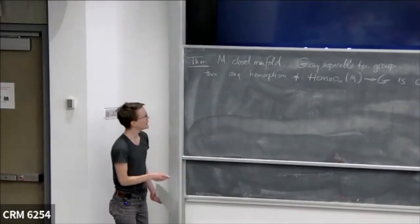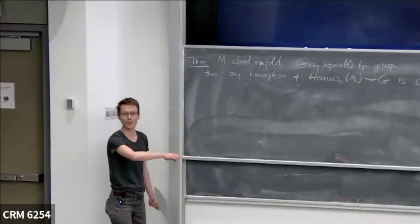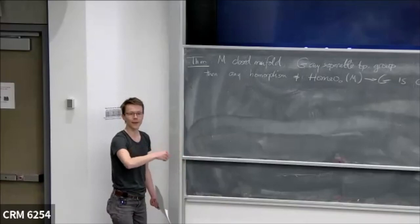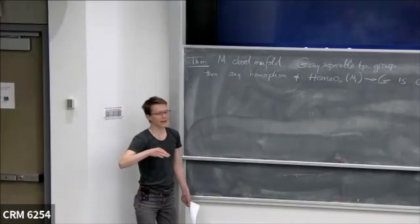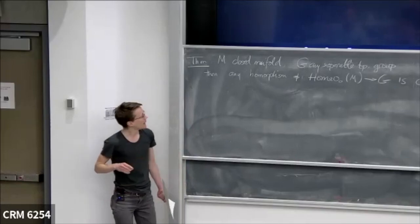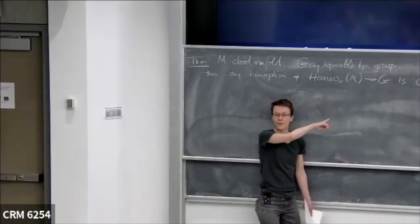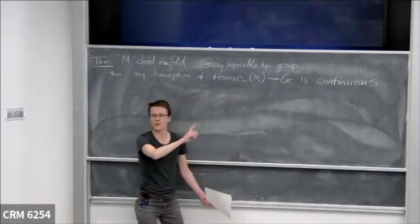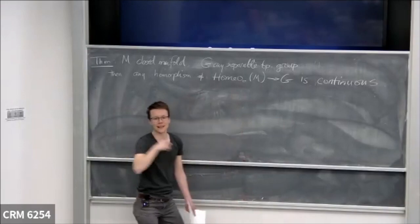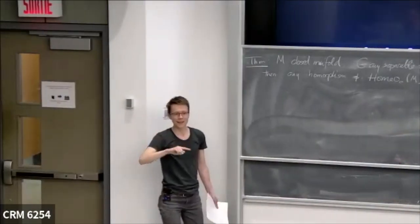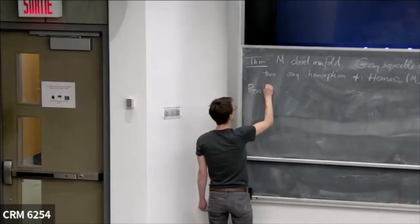We're going to do the proof with some commentary along the way about what tools we're using and what other situations these might apply. If you're an expert on some of these sub-tools, you might want to think about questions like: how am I using a group of homeomorphisms instead of diffeomorphisms, or piecewise linear homeomorphisms? What if instead of a manifold it was a Cantor set? If you're seeing this for the first time, don't worry about that.